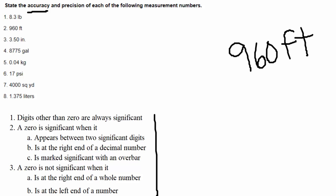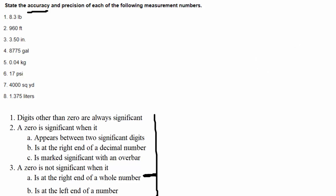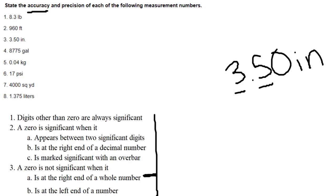Next example: 960 feet. I can say for sure I have two non-zero digits. The zero is at the right end of a whole number, so referring to our rule, a zero is not significant at the right end of a whole number. So 960 feet has only two significant digits. Next example: 3.50 inches. I see two non-zero digits to start, and the zero is at the right end of a decimal number, so it is significant. That gives us three significant digits.